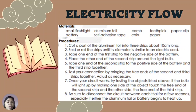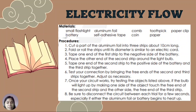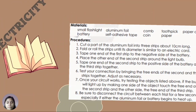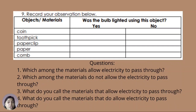Be sure to disconnect the circuit between each trial for a few seconds, especially if either the aluminum foil or battery begins to heat up. Record your observations: the objects or materials are coin, toothpick, paper clip, paper, and comb. Answer the following questions: which among the materials allow electricity to pass through? Which among the materials don't allow electricity to pass through? What do you call the materials that allow electricity to pass through, and what do you call the materials that do not allow electricity to pass through?